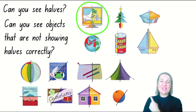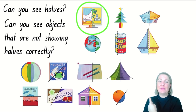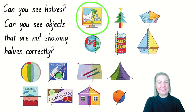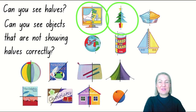What about the Christmas tree? Does the line of separation down the middle show that the picture has been split in half correctly? What do you think? I think it does too — this Christmas tree is showing halves.